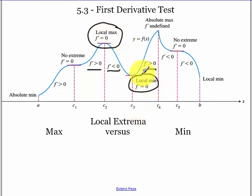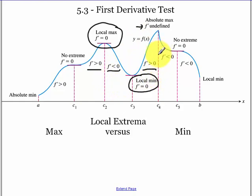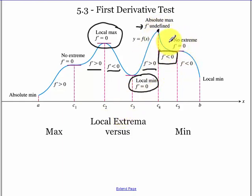In these cases these are critical points — here we're undefined, which is also a critical point. When our derivative changes from positive to negative, we have a maximum. Even though our derivative may be zero, if our first derivative doesn't change signs, that's no extrema.